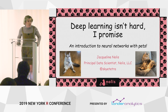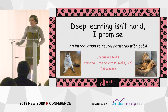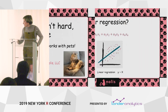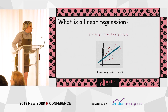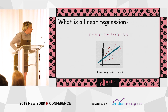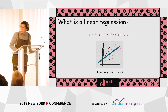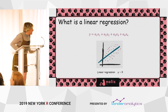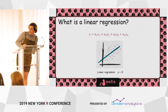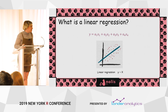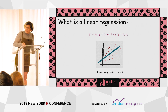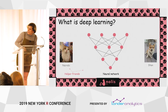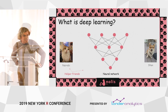We're talking about deep learning, and deep learning is hard — but deep learning isn't hard, I promise. So we're going to start with linear regression. Linear regression: that's not hard, right? A linear regression is you take some X's, multiply them each by a coefficient, and you get a Y. You fit those coefficients and you get a line. Hopefully that's a linear regression. But what's deep learning?